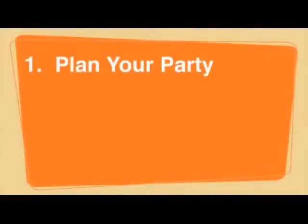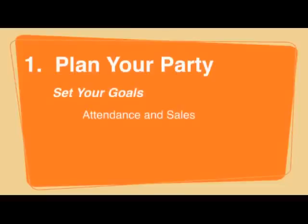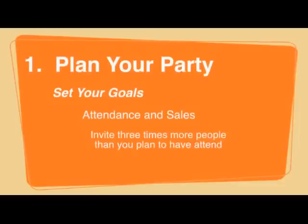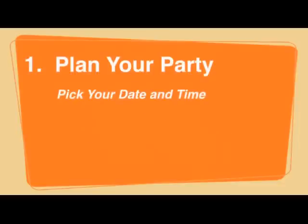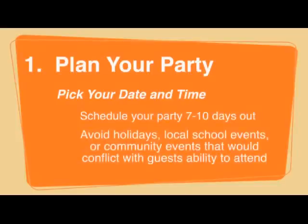To get started with your Go Party, you first need to make some plans. Set your attendance and sales goals. The rule of thumb is to invite three times more people than you want to attend. If you want to have 10 guests, you will need to put out 30 invitations. Next, pick the date and time of your Go Party and schedule it 7 to 10 days out. When picking your date, be aware of any holidays.